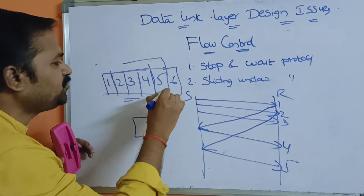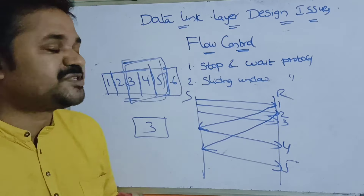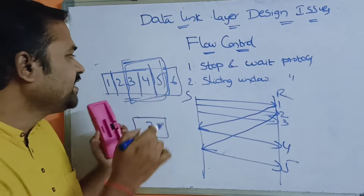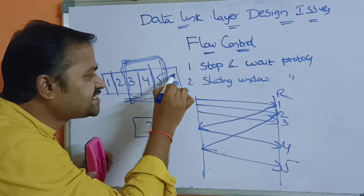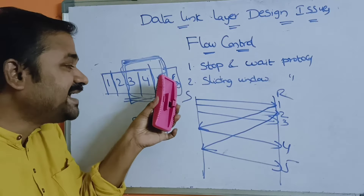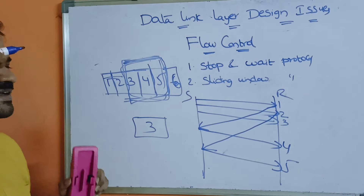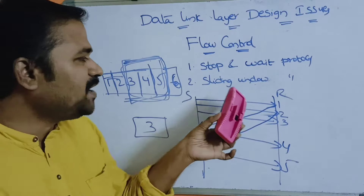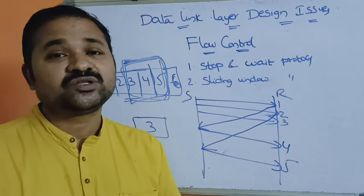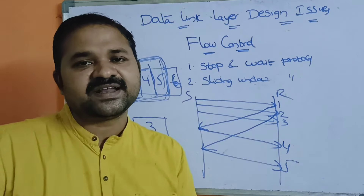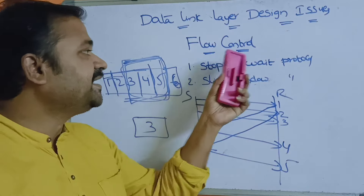Since an acknowledgement is provided for frame 2, it is removed from the sliding window. Now the sliding window contains frames 3 to 5. The frames before the sliding window — frames 1 and 2 — indicate that the receiver already provided acknowledgement for those. The frame after the sliding window — frame 6 — indicates that the sender has not yet sent it. With the help of the sliding window protocol, we can control the speed in an efficient manner so there is no mismatch between sender and receiver, and both work at the same speed. This is how we maintain flow control.